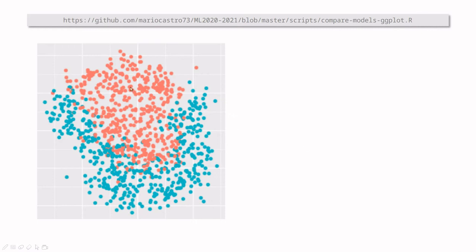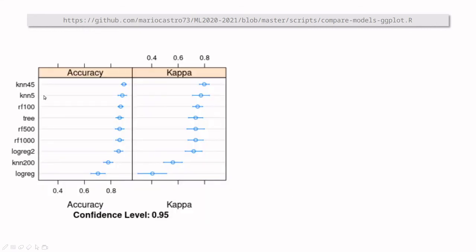Another way in which you can compare models is more qualitative. Instead of using these metrics like accuracy, sensitivity, or the area under the curve, you can use simply your eyes. And I'm going to use ggplot here in order to compare. So let's go back to our dataset. We have the reds and the blues, and we want to classify them according to different methods. So here I've tried k-nearest neighbors with 45 nearest neighbors, k-NN with 5, random forest with 100 trees, decision trees, random forest with 500 trees, random forest with 1000 trees, logistic regression with a quadratic predictor, k-NN with 200 nearest neighbors, and logistic regression out of the box. And as you can see here, except these two which are actually not so good, accuracy and kappa are almost the same for all the models.